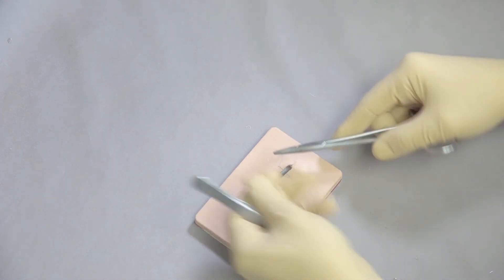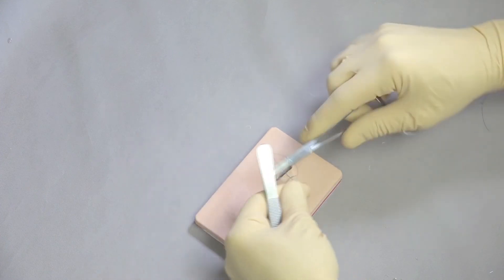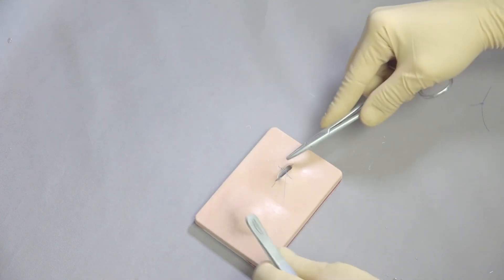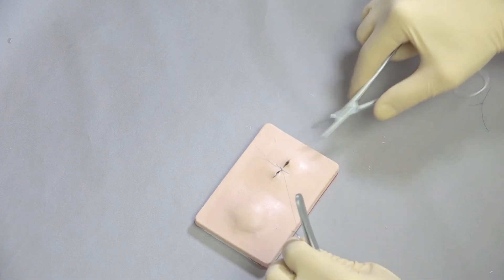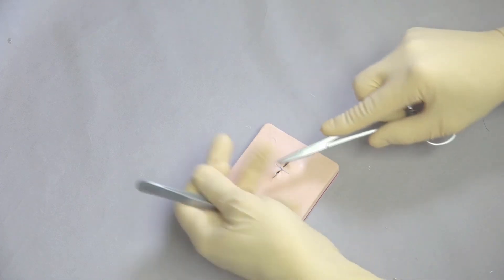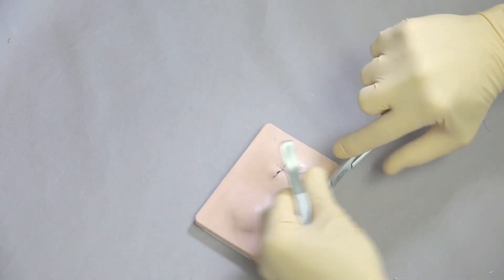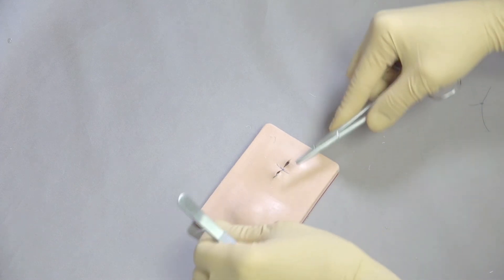So four throw square knot over the top. Until the tissue opposes. And then we can go ahead and finish that up. But the rest of it is there's no tension. So we don't have to use tension relieving.